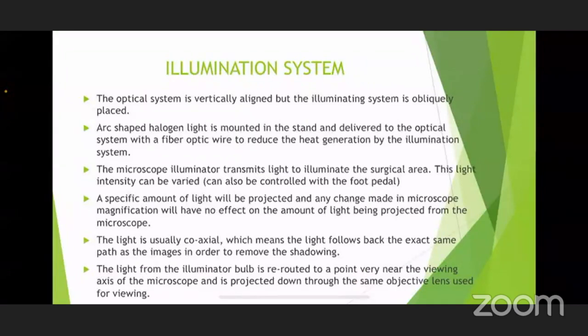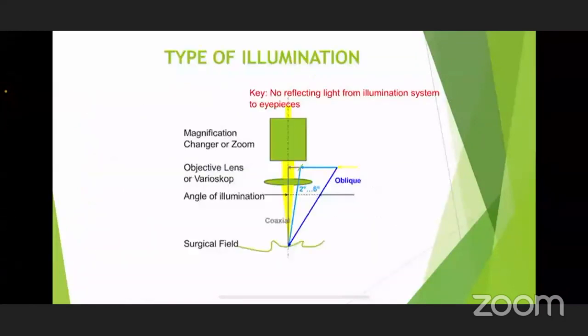One important thing regarding the illumination system: we use a coaxial method of illumination. The purpose of coaxial illumination is that the light follows back the same path as the images, and this helps us in avoiding shadowing. This is an important concept used in ophthalmic operating microscopes.